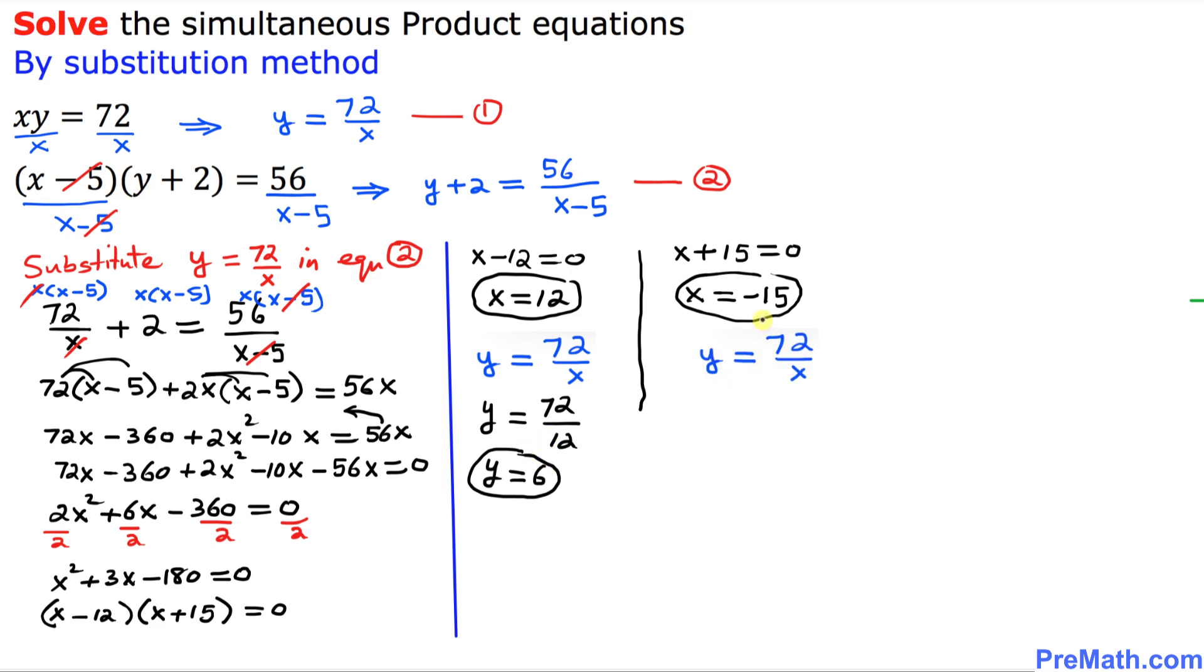And now we're going to repeat the process for another value of x, which is negative 15. So we know y equal to 72 over x. So simply y equal to 72 divided by x is negative 15. And if we reduce this one, we divide both sides by 3. We are going to get negative 24 over 5 as y value.